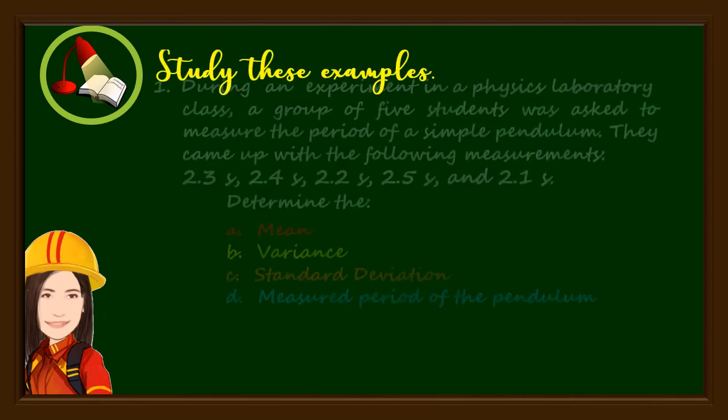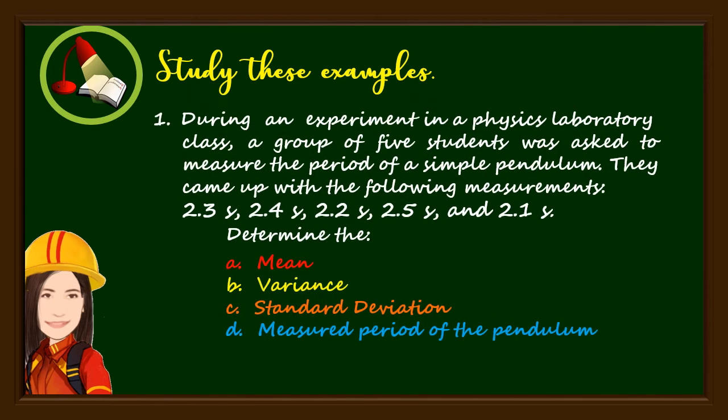Study these examples. During an experiment in a physics laboratory class, a group of 5 students was asked to measure the period of a simple pendulum. They came up with the following measurements: 2.3 seconds, 2.4 seconds, 2.2 seconds, 2.5 seconds, and 2.1 seconds. Determine the mean, the variance, the standard deviation, and the measured period of the pendulum.